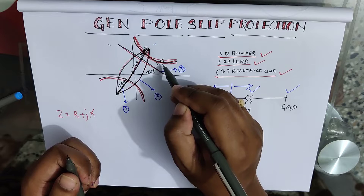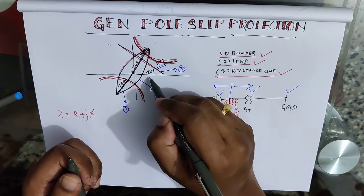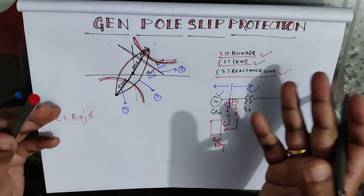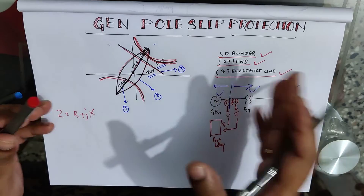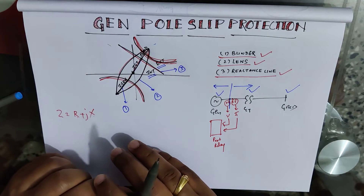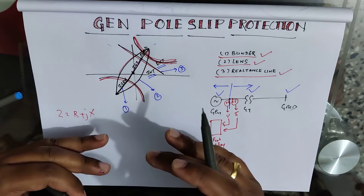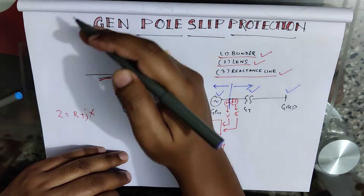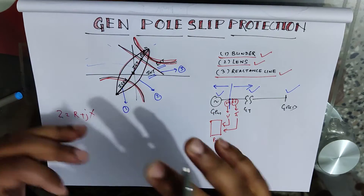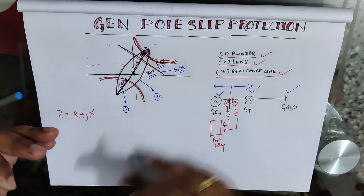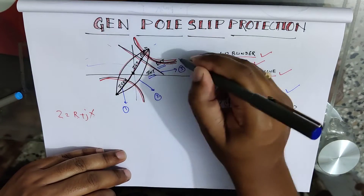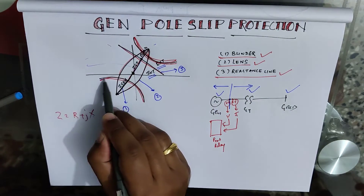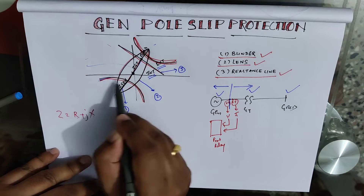Above the reactance line, the zone is known as external, and below this line the zone is known as internal. This means if the center of the swing is present inside our power station or inside the GTU system, then the swings experienced by the generator should follow a trajectory below this line. This is a typical internal swing, as shown in the picture, and an external swing follows a different trajectory.